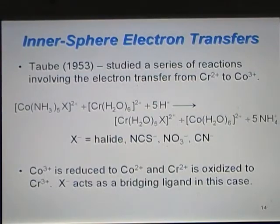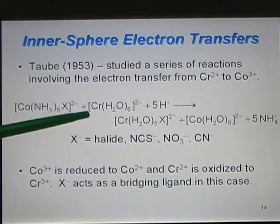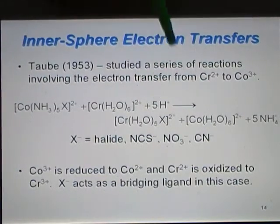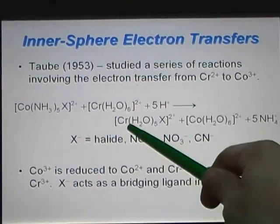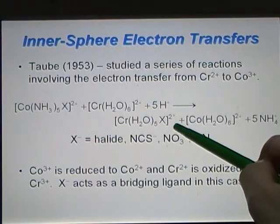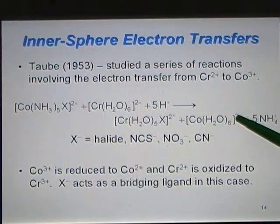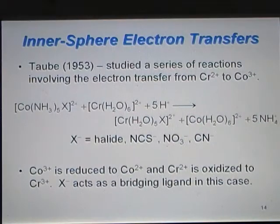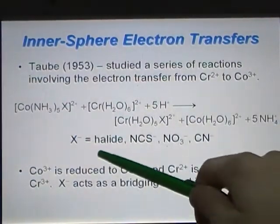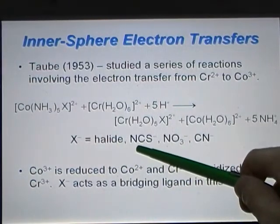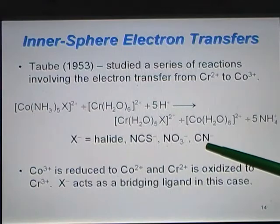In 1953, Talby studied a series of reactions involving Cr 2+ and Co 3+. Co NH3 5 X 2+ plus Cr H2O6 2+ in acid yields Cr H2O5 X 2+ plus Co H2O6 2+ plus 5 NH4+. In this case, this ligand X is either a halide, NCS minus, NO3 minus, or CN minus.